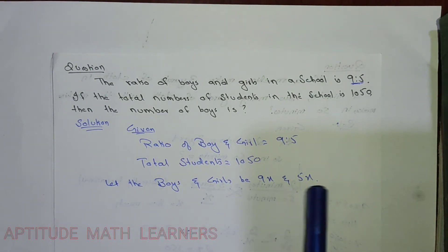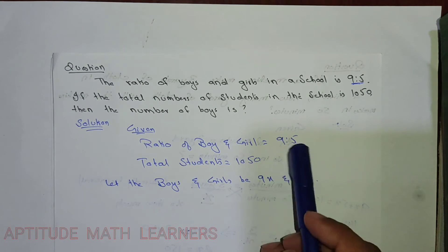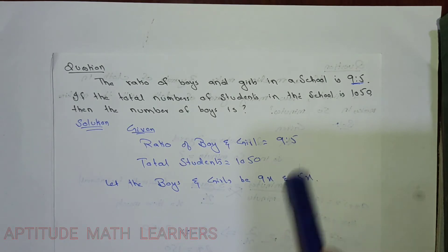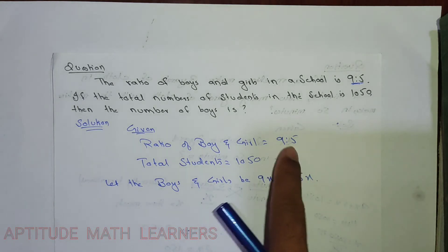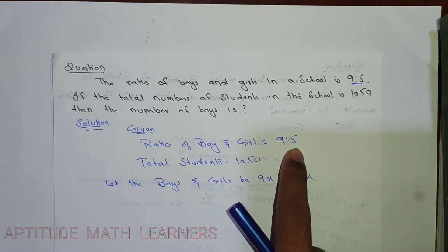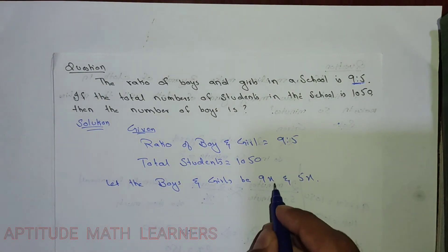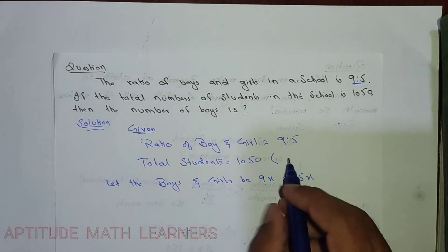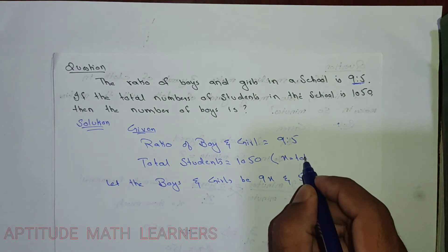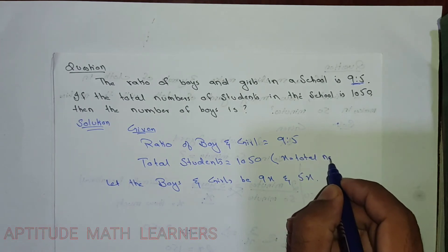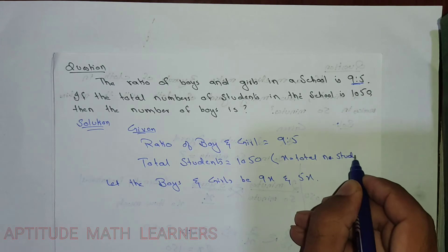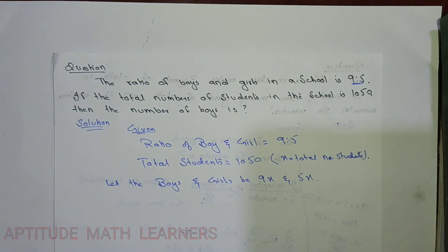For simplification, we let the boys and girls be 9x and 5x respectively. So 9x represents the boys and 5x represents the girls. Here x relates to the total number of students.